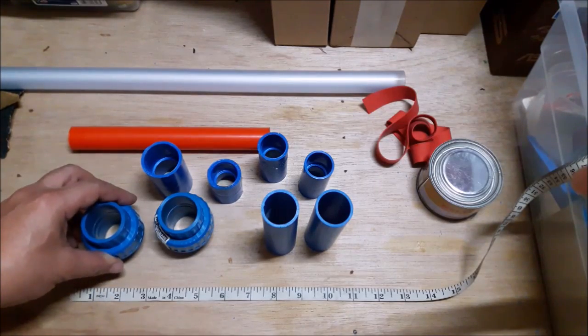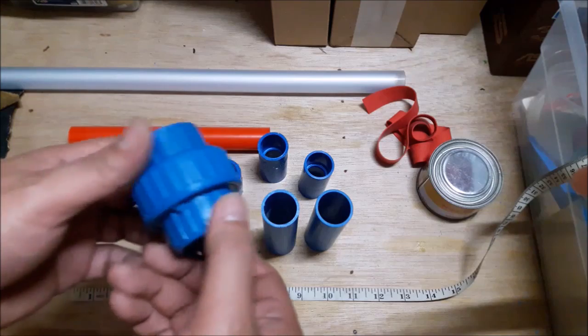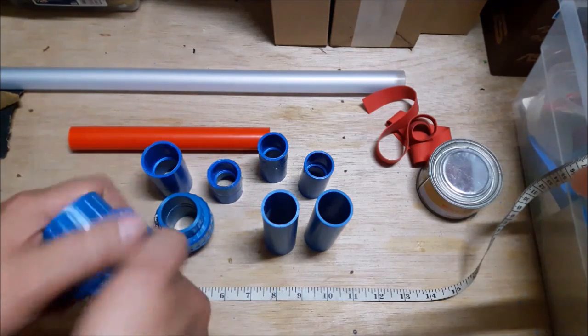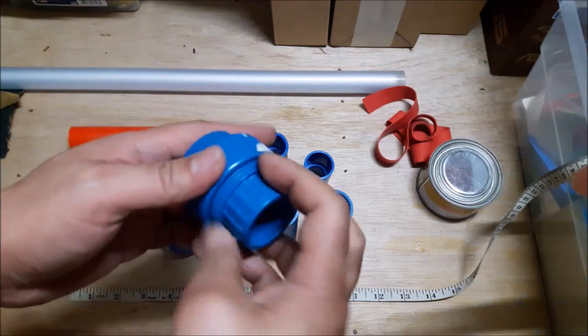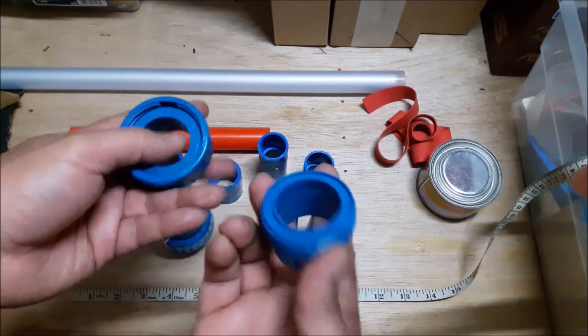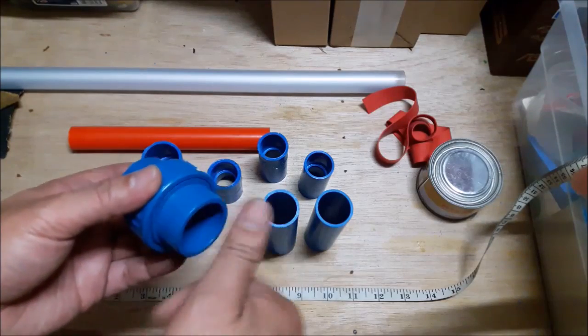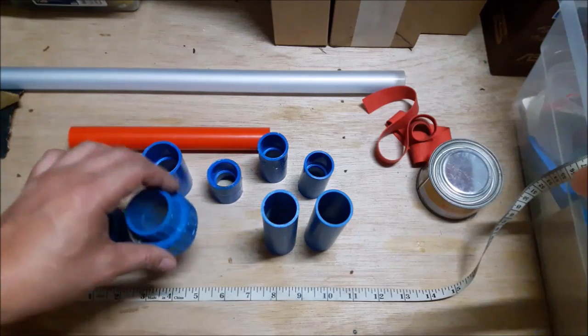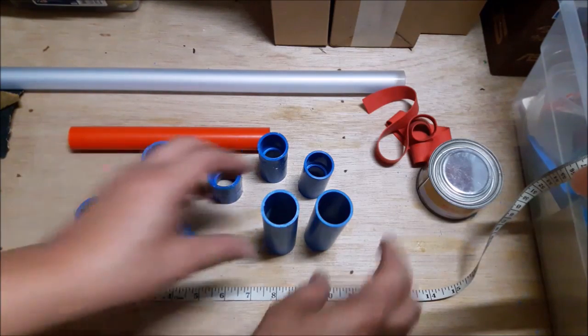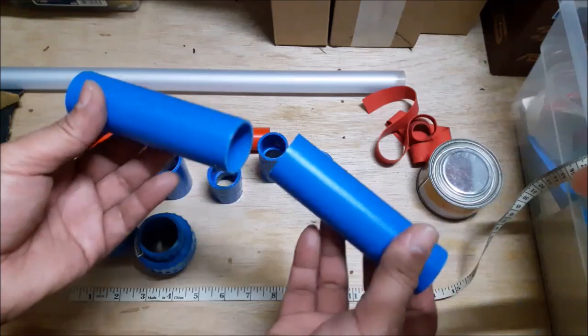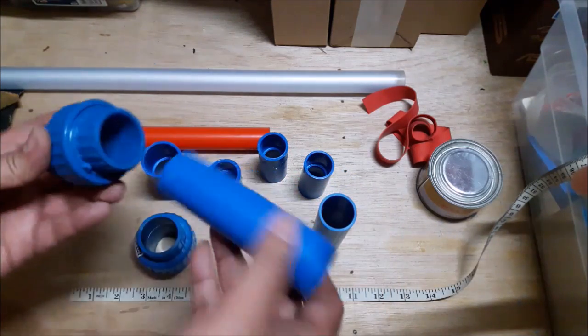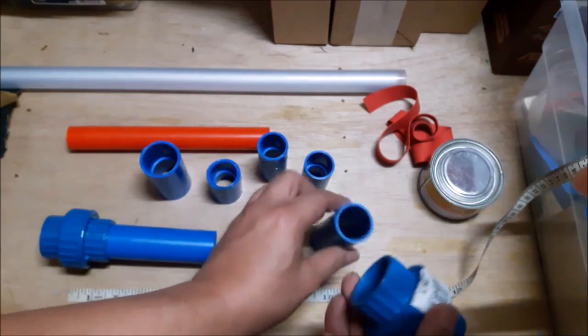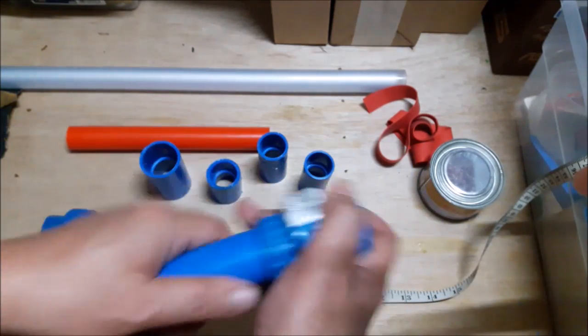So these are the parts that we'll need. This is a quick connect fitting for PVC pipes. It has an inner diameter of 1 1⁄4 inches. So these parts you can get at most hardware stores. So you'll need two of the quick connect fittings. These are PVC pipes about 4 1⁄2 to 5 inches long with an outer diameter of 1 1⁄4 inch. So they'll fit inside the quick connects.